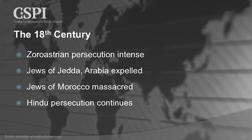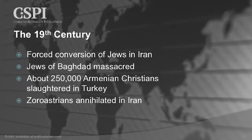In the 18th century, the Zoroastrian persecution becomes intense. The Jews of Jeddah, Arabia are expelled. The Jews of Morocco are massacred. The Hindu persecution continues. And in the 19th century, more forced conversions, more massacres, and now the beginning of a tragedy that extends into modern times: 250,000 Armenian Christians are slaughtered in Turkey.